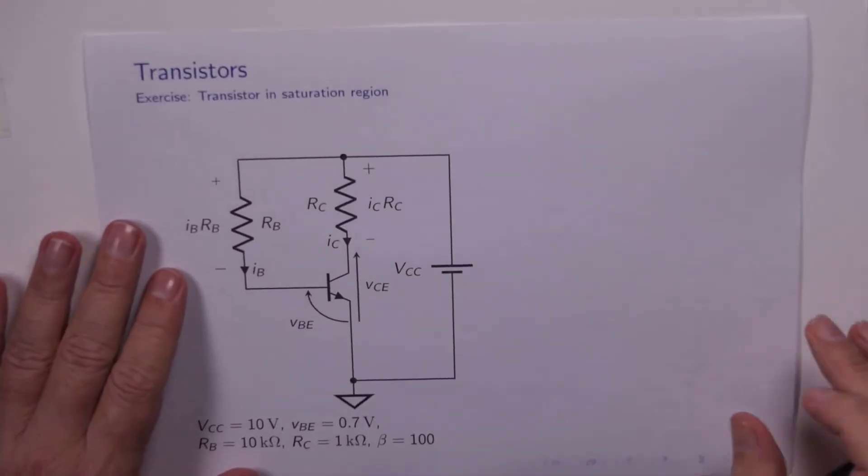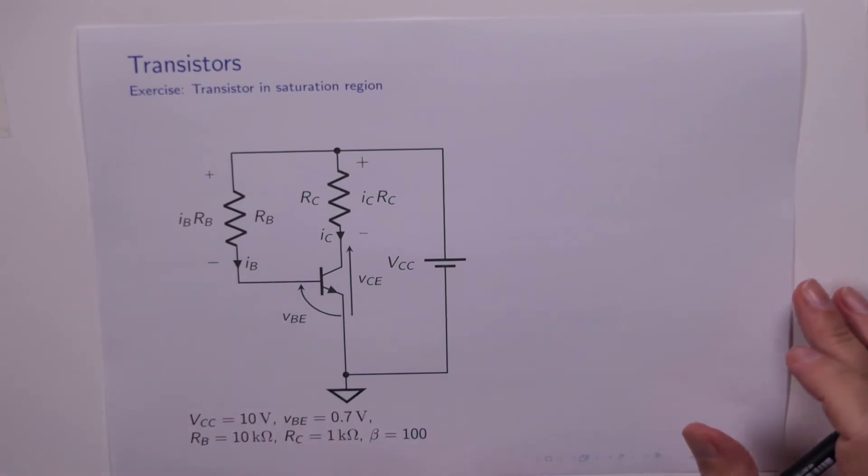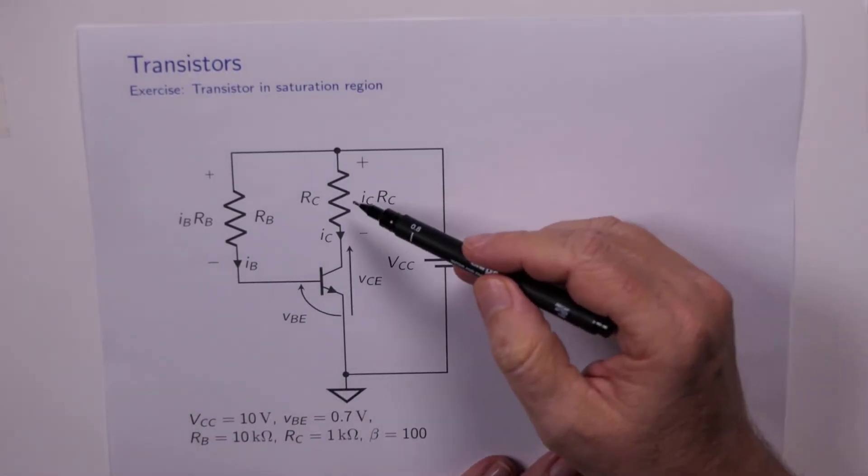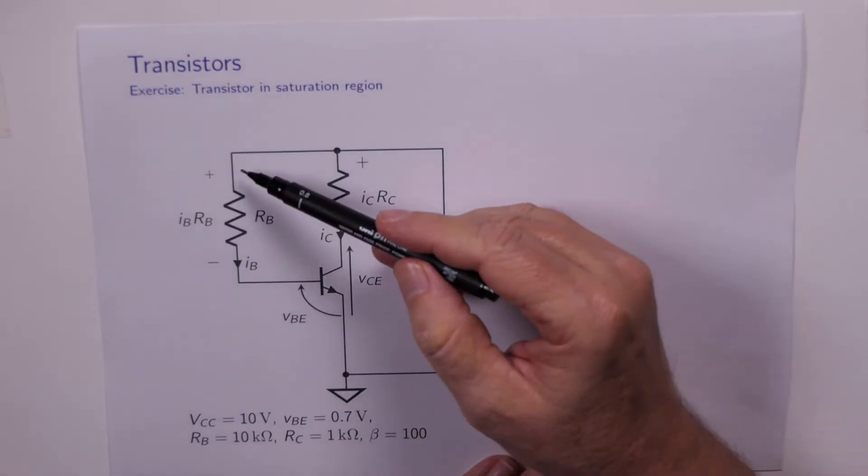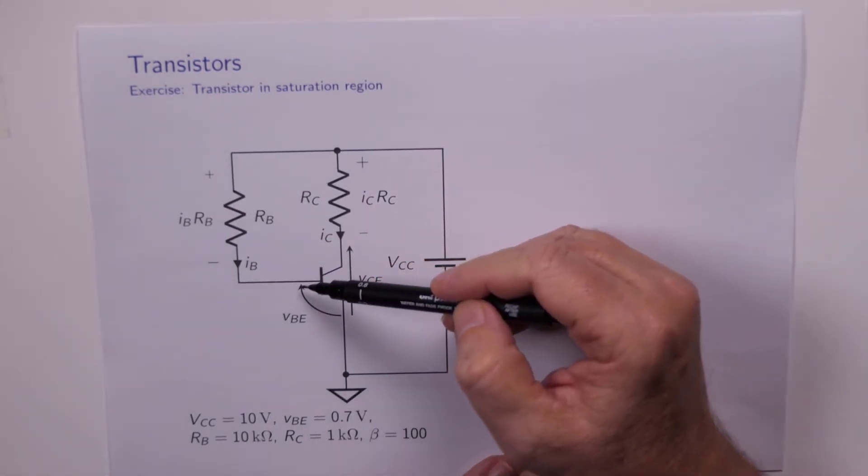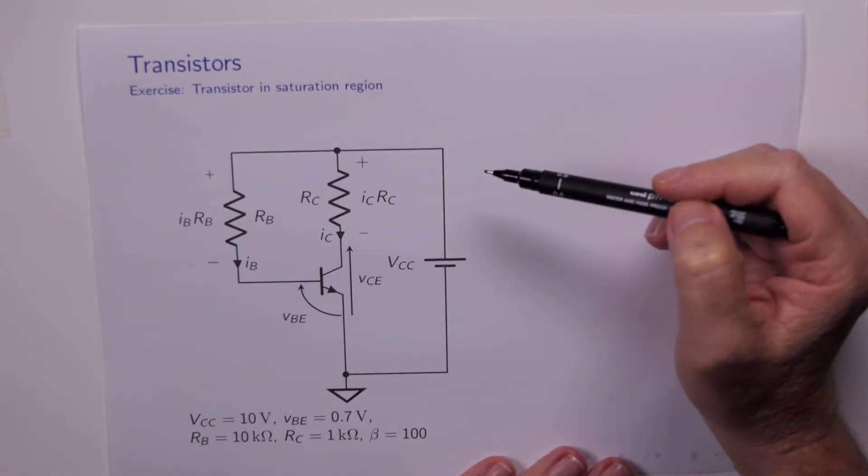Here's another example. This one is potentially more useful. We've got the same output loop arrangement, but now we've got a resistor RB connecting VCC to the base.